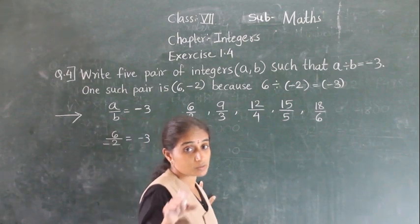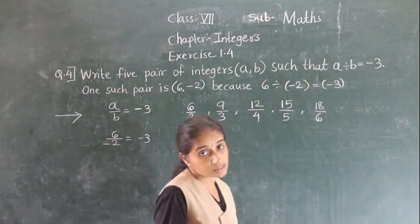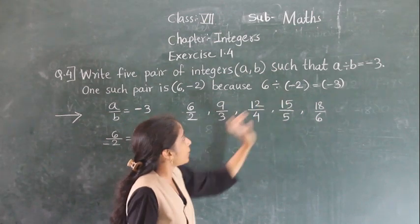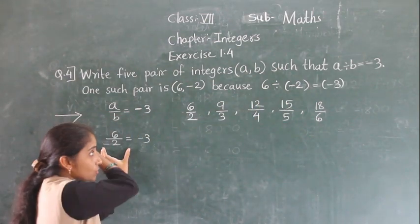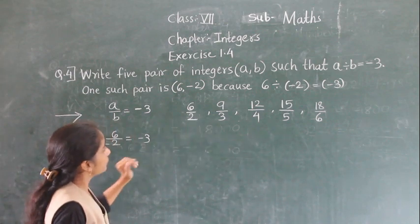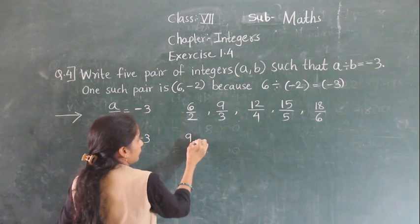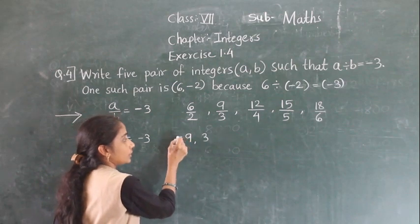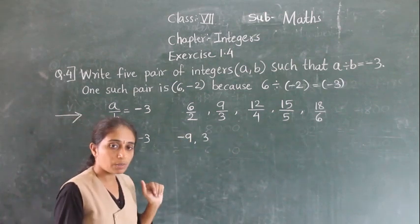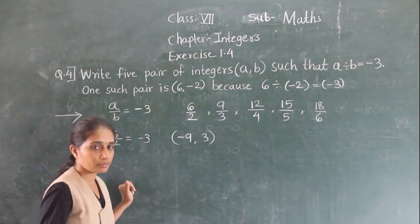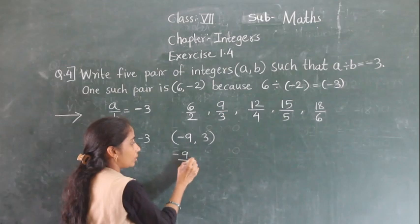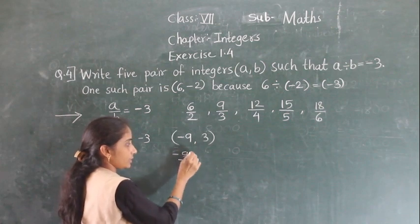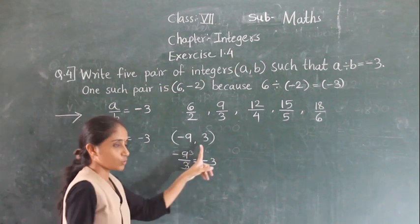We got pairs of integers but we need to get minus 3. So what we can do: for the pair 9 and 3, give the minus sign to one of the numbers. So minus 9 divided by 3 gives minus 3. That is one pair.